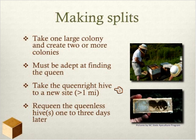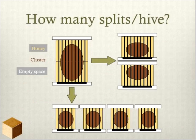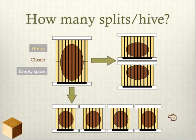When making a split, you want to take the portion with the queen and move it a further distance from the original location to minimize drifting back into the original colony. For colonies that don't have the original queen, you'll need to place new queens into them. The question then becomes: how many splits per hive? Do you split one colony into two, or into four or five smaller nukes?